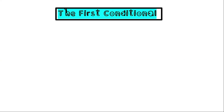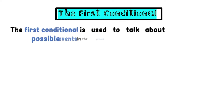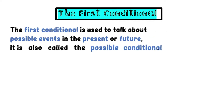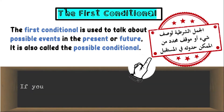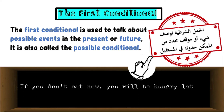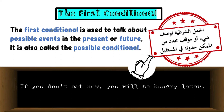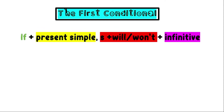As for the first conditional, we use it to talk about possible events in the present or future. It is also called the possible conditional. Like: if you don't eat now, you will be hungry later. It is possible that you will be hungry later if you don't eat. The form is: if plus present simple, comma, then subject plus will or won't plus infinitive.